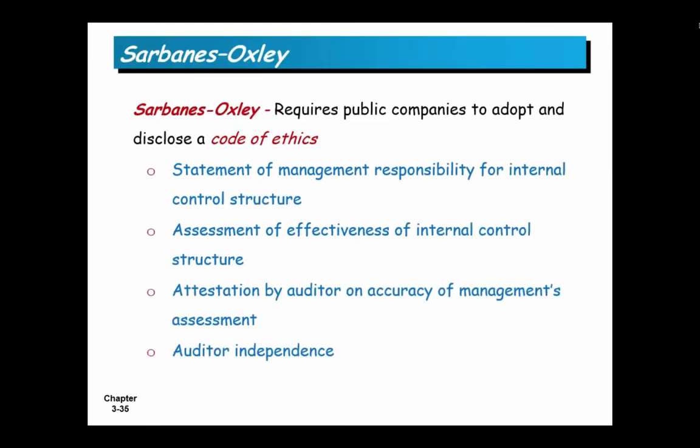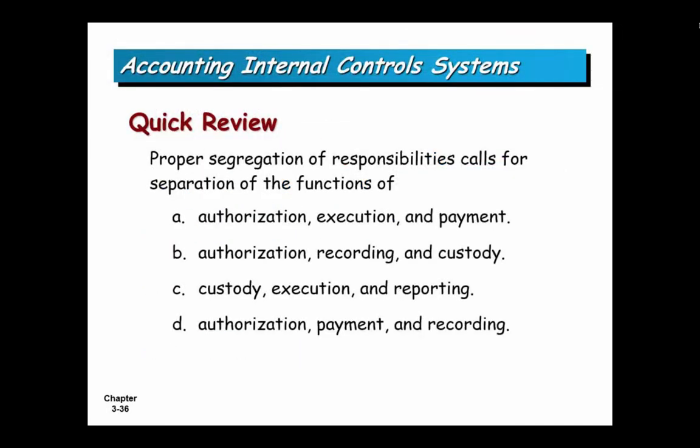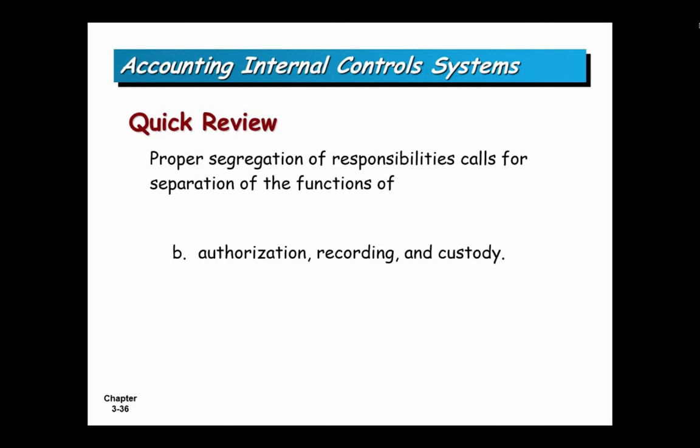Sarbanes-Oxley: as it relates to a code of ethics, management is responsible for internal controls — they cannot say 'I didn't know.' You have to prove the effectiveness of your internal controls. Auditors need to be independent, though that requirement has weakened over the last 12 years or so. The auditor must attest to the accuracy of management's assessment. Management assesses their internal controls; auditors attest to that assessment.